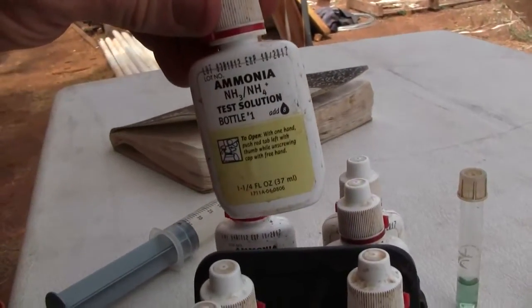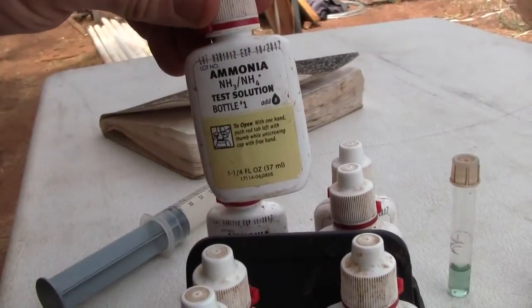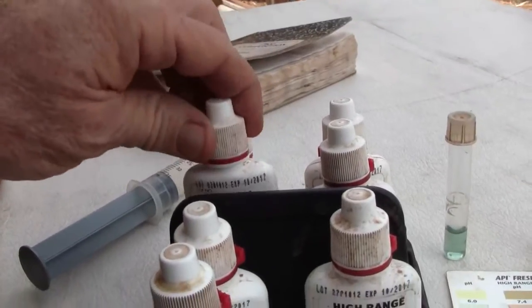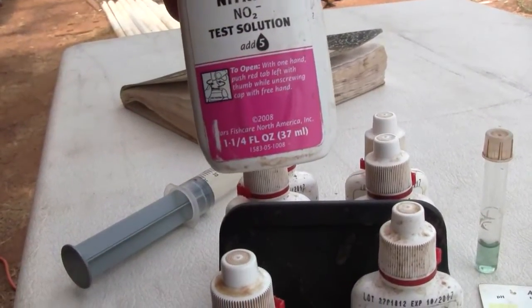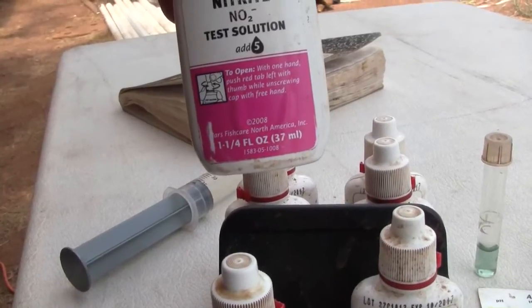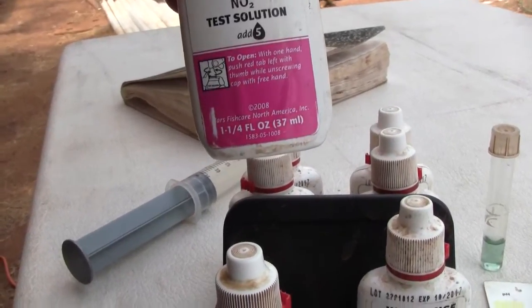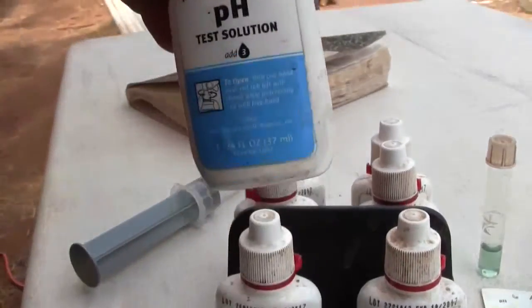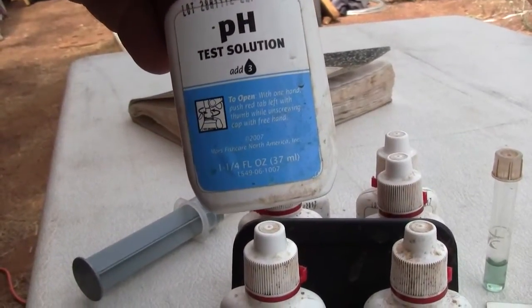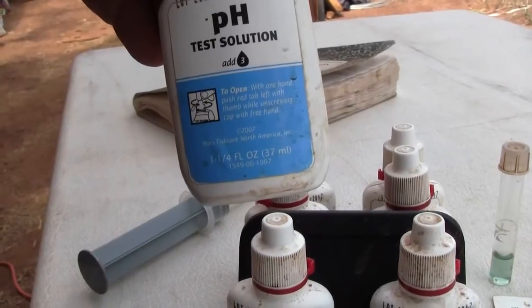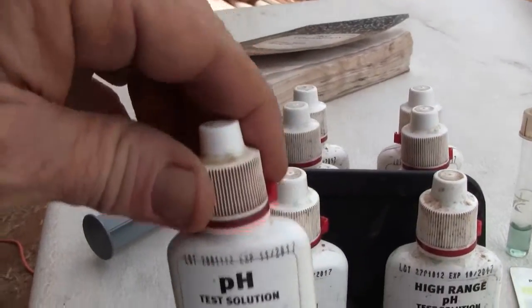For ammonia I put in two eighths of the amount of water which is one quarter of the line height. For nitrite I put in two fifths of the height of the line. And for pH, instead of three drops I put in one drop and that's one third of the height of the line.